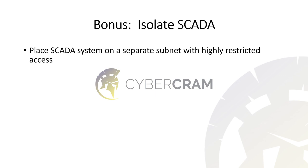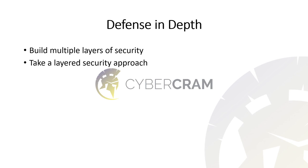On your own networks, if you have critical systems that could impact the lives of others, keep those on isolated segments. If you do have a breach, it's much more difficult for the attacker to breach those subnets and systems. In summary, it's important to keep defense in depth in mind and how additional layers of security could have prevented this attack. What can you do on your own network to improve security and thwart attacks? What's one layer you can implement this week or this month? By adding layers over time, you're continuously improving your security posture. Take a layered security approach to your network and organization.